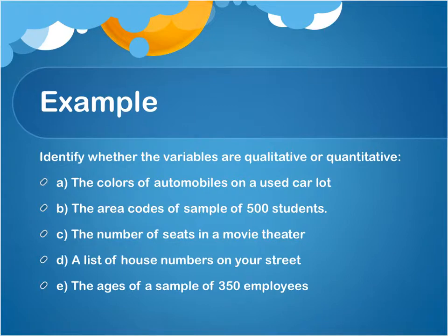The first variable: the colors of automobiles on a used car lot. Ask yourself, if I go to a used car lot and look at the colors of the automobiles, what kind of answers am I going to get back? I'd probably get something like red, blue, black, white. Those are all name variables, so we call that a qualitative variable. This first variable is qualitative.